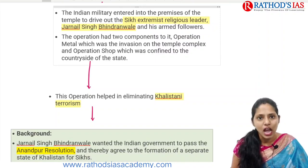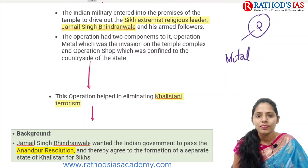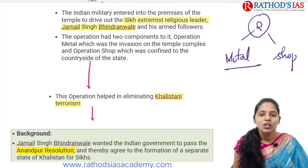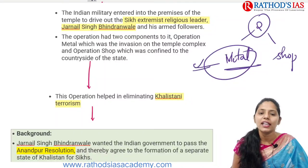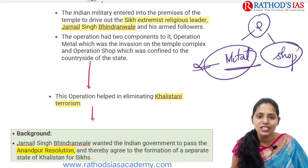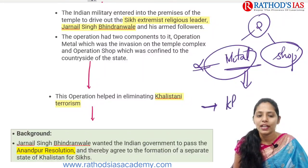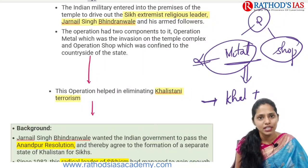The Indian military entered the premises of the temple to drive out Jarnail Singh and his armed followers. The operation had two important components: first, Operation Metal — regarding the invasion of the temple complex — and second, Operation Shop — which was confined to the countryside of the state. Finally, this operation helped eliminate Khalistani terrorism in India.